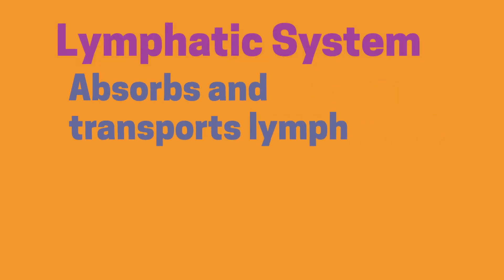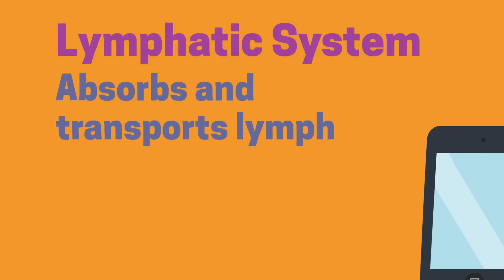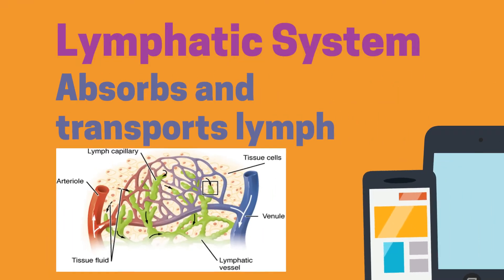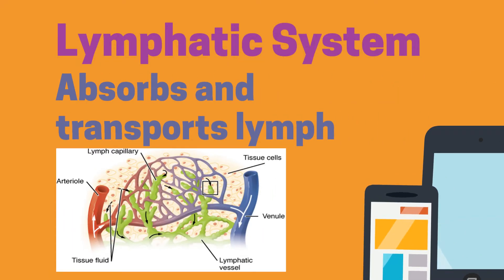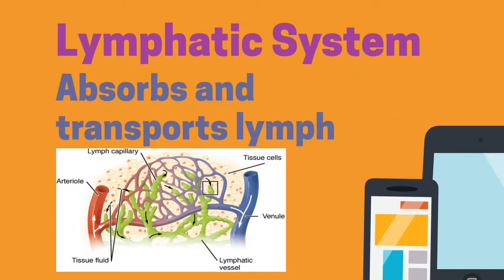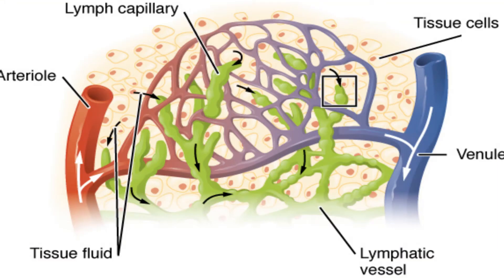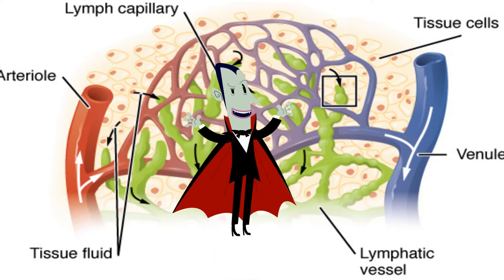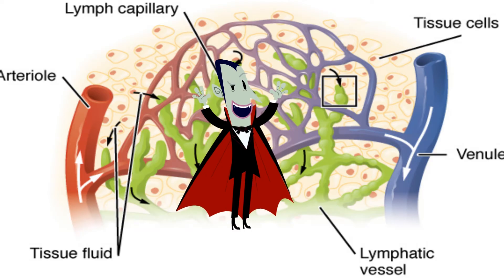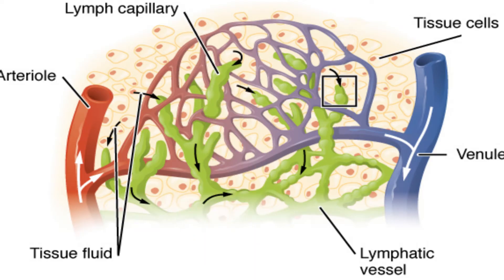The lymphatic system absorbs and transports lymph. Lymph is a clear fluid that is a result of blood leaking out of capillaries. As blood moves out of capillaries, some of it is not reabsorbed — you lose around 3 liters of blood a day. The lymphatic system reabsorbs this loose blood.